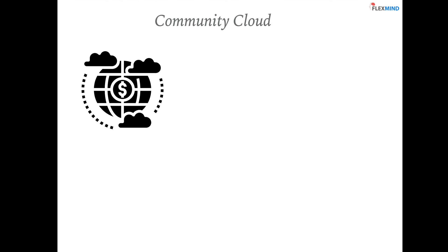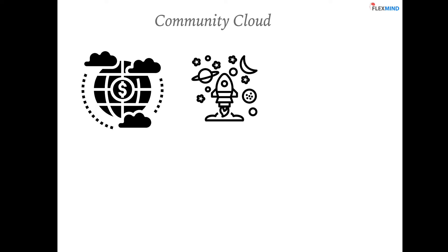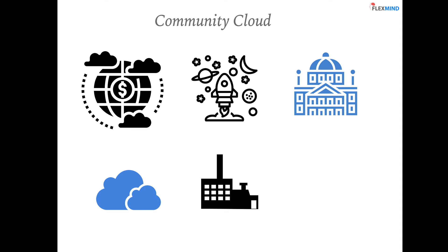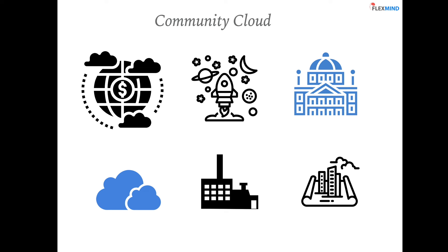Community cloud is specifically meant for various organizations sharing the same interests or concerns, such as a Mars mission or federal government projects. It can be managed by one or more organizations, and may exist on-premise or off-premise in the cloud. This model is suitable for organizations that work on joint projects.